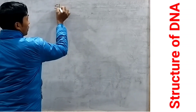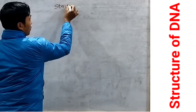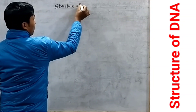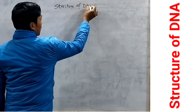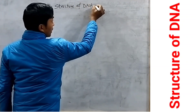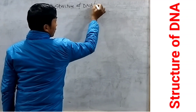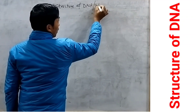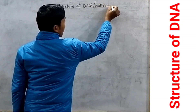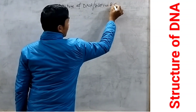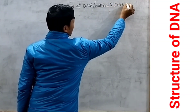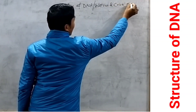Structure of DNA. DNA is also called the Watson and Crick model.